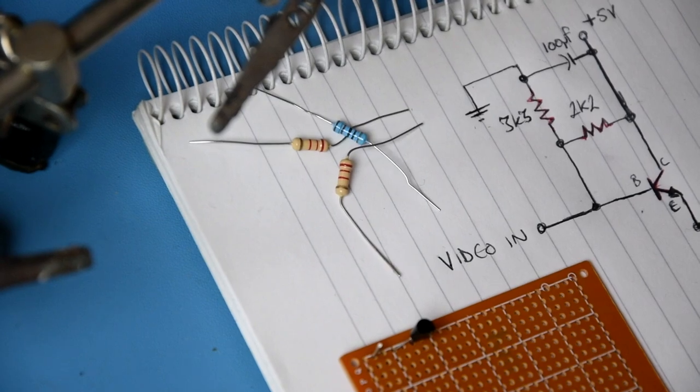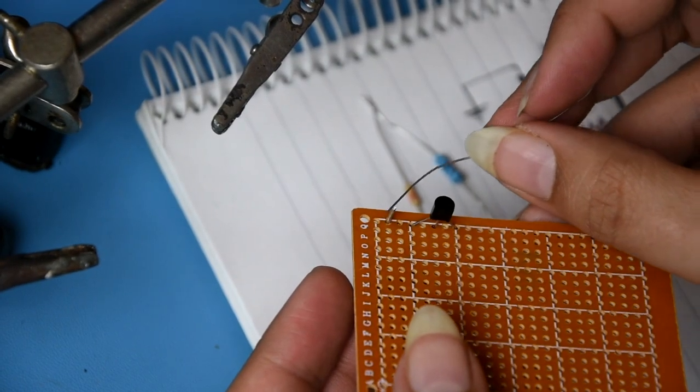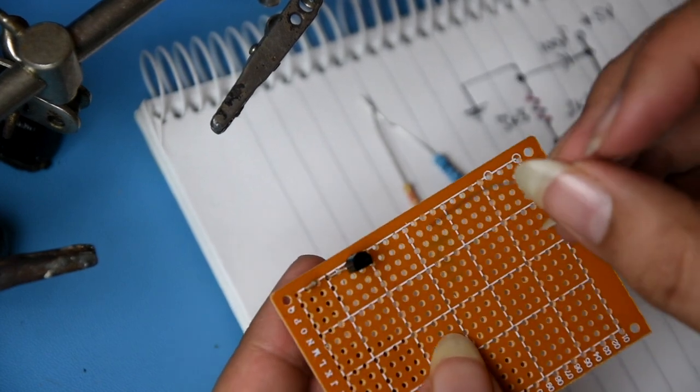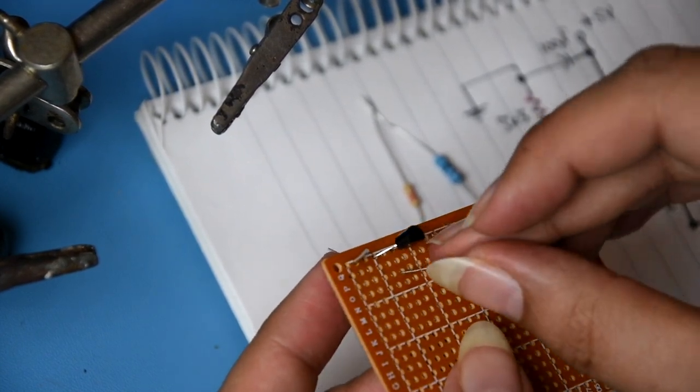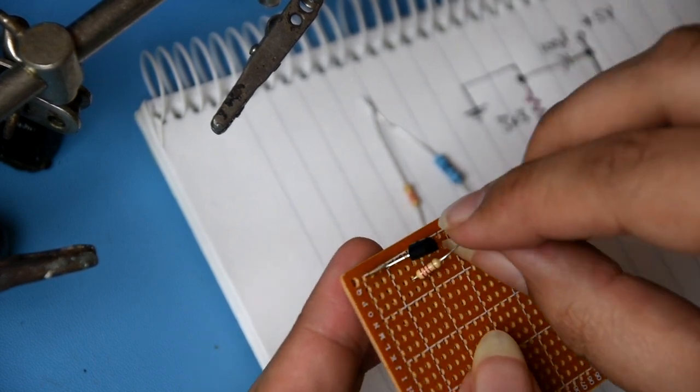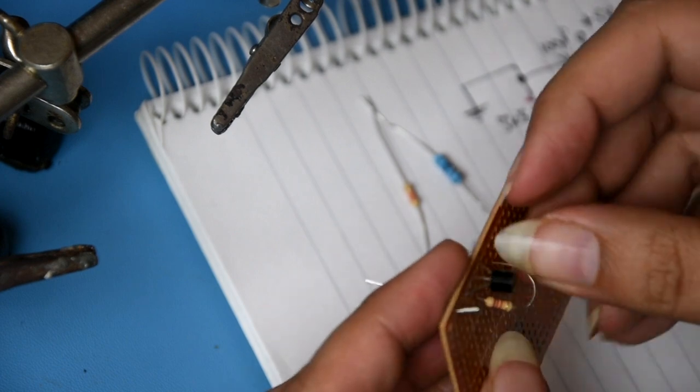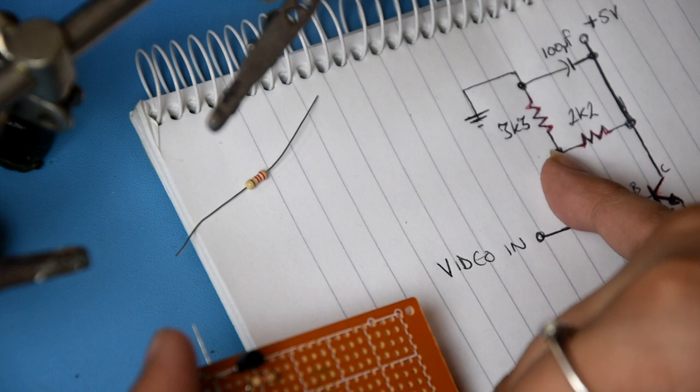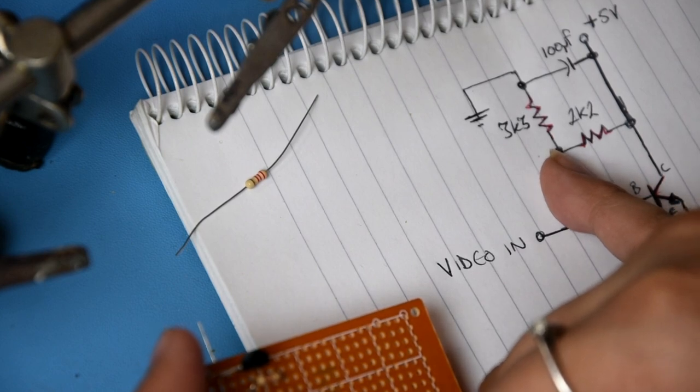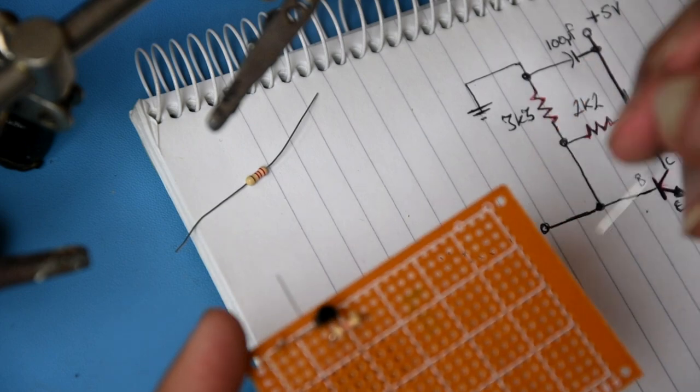So that is the emitter there. Emitter has got the output video output pin and we just need from the base, which is the middle, going to the collector, which is the end one. So let's just put one there. Now again, it's going from the base in parallel to the base to the ground.